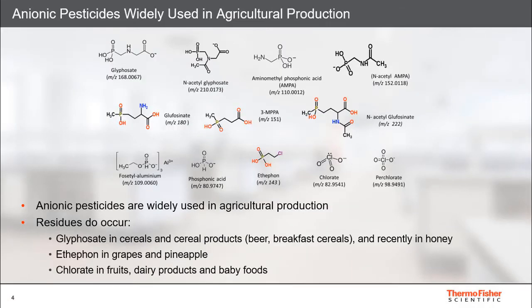Anionic pesticides are widely used in agricultural production and residues are often detected in food. For example, glyphosate is commonly detected in breakfast cereals, beer, and more recently in honey. Etephon has been detected in grapes and pineapples, while chlorate has been detected in fruits, dairy products, and baby food.